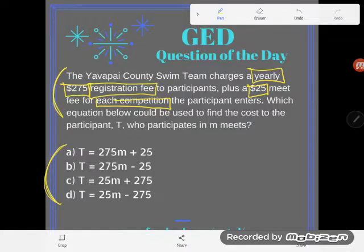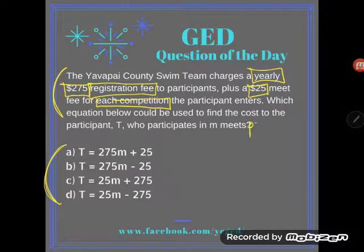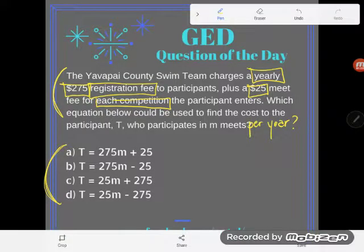I should clarify by including a couple more words here — let's pretend this was always there: who participates in M meets per year? Which equation below could be used to find the cost to the participant T who participates in M meets per year?